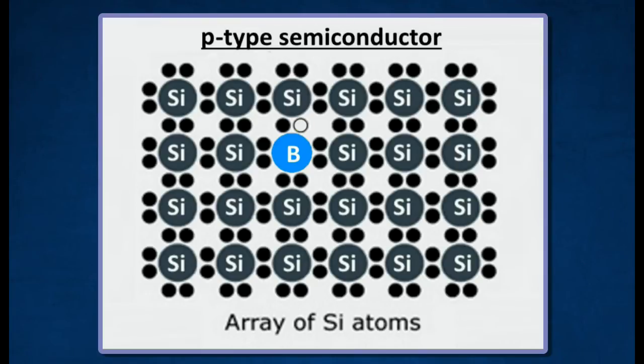An electron is pulled from a neighboring atom to fill the deficiency in a valence bond which thus becomes a hole. Therefore, the holes become the positive charge carriers. Such semiconductors are known as P-type.